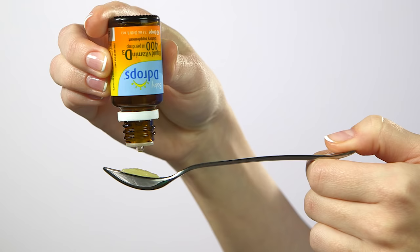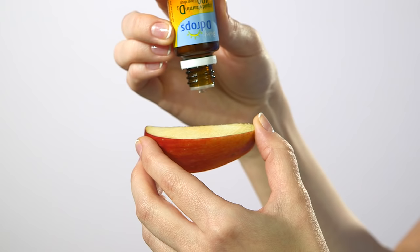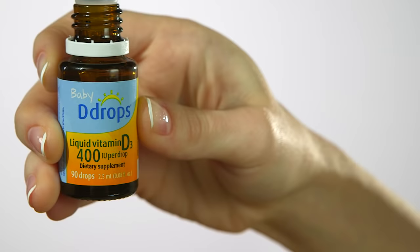Once the baby is older and begins to eat solid foods such as cereal, Baby D Drops may be dropped onto food and then given to the baby.